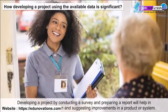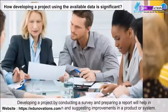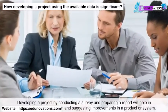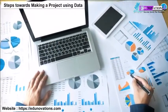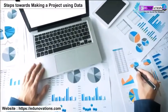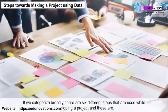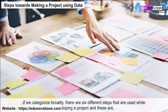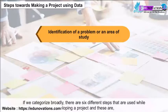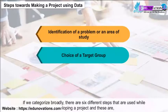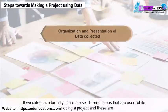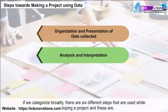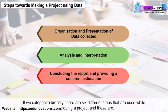Developing a project by conducting a survey and preparing a report will help in analysing relevant information and suggesting improvements in a product or system. There are six different steps used while developing a project: identification of a problem or area of study, choice of a target group, collection of data, organization and presentation of data, analysis and interpretation, and concluding the report.